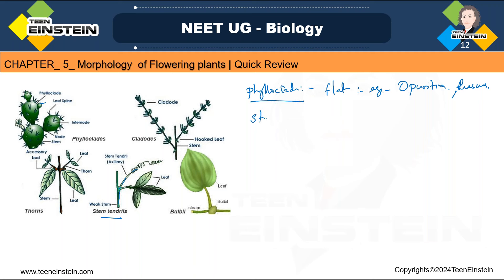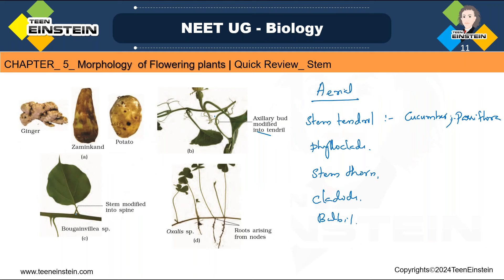Stem thorn — example is Bougainvillea. Here the leaf axil or apex of the branch gets modified into pointed structures. In Bougainvillea it is very clear — pointed structures are there and that is called a thorn. In Citrus also you can see this stem thorn. Next is cladode.